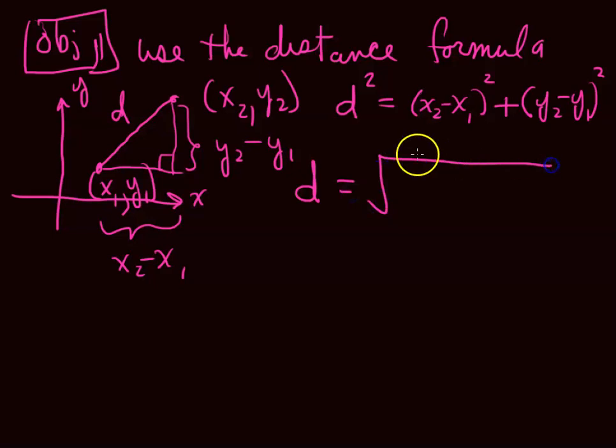this also assumes, because we'll be given this square root in the formula, that this is always a positive number. x of 2 minus x of 1, when you square that, it's positive. y sub 2 minus y sub 1, when you square that, it's positive. And the square root, take the principal square root, and that is positive. So that's how you figure out the distance in a plane.